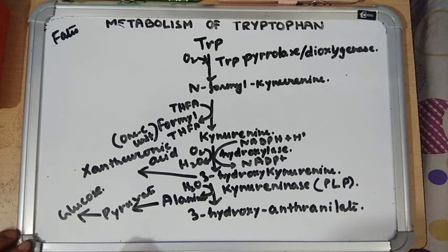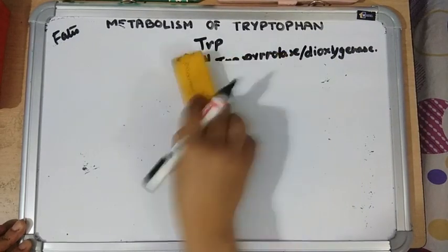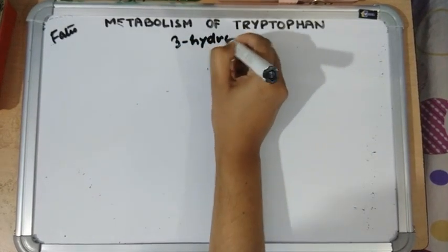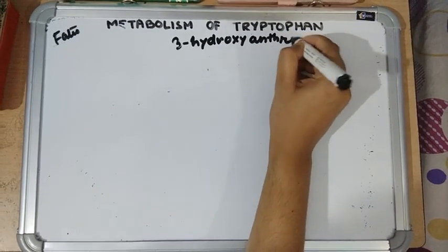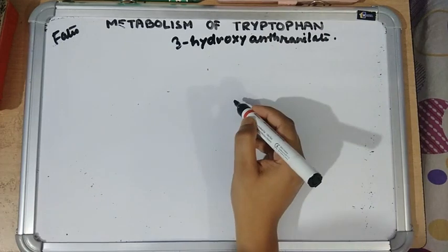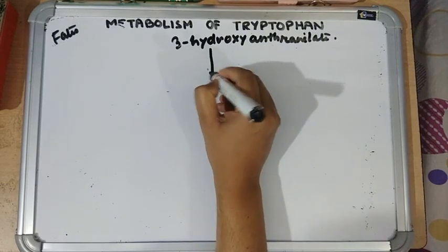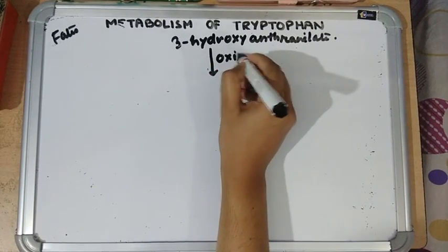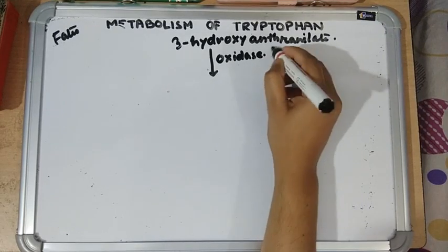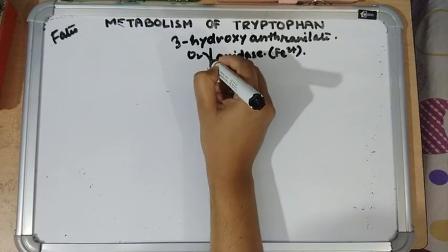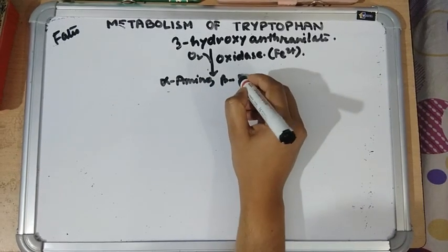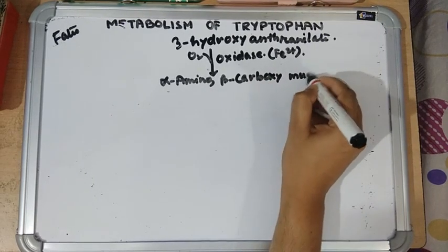Now starting with 3-hydroxyanthranilate, which we got from 3-hydroxykynurenine: it undergoes oxidation by 3-hydroxyanthranilate oxidase, which is a dioxygenase enzyme.